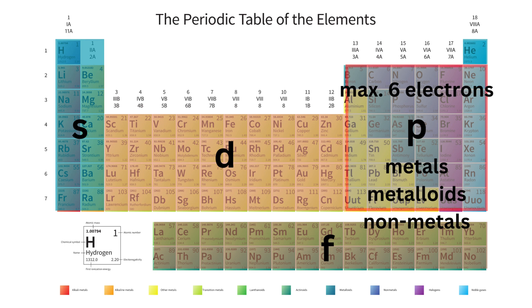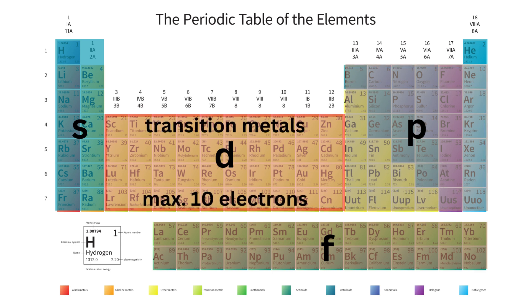P orbitals can accommodate up to six electrons. The P block contains a rich variety of elements, from reactive non-metals to semi-metallic metalloids. In the middle, we have the D block, home of the transition metals. These elements have outer electrons in D orbitals, which can hold a maximum of ten electrons. Transition metals are great conductors and have high melting points.